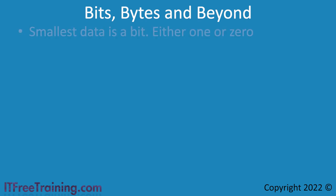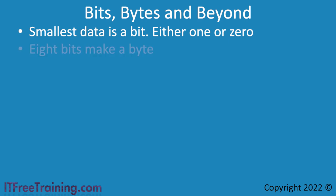The smallest piece of data on a computer is a bit. A bit is stored inside a computer using the on or off state, so it has two states and can be used to store a 1 or a 0. If you group 8 bits together, you get what is referred to as a byte. A byte is a fundamental unit of measurement that many other units of measurement are derived from.